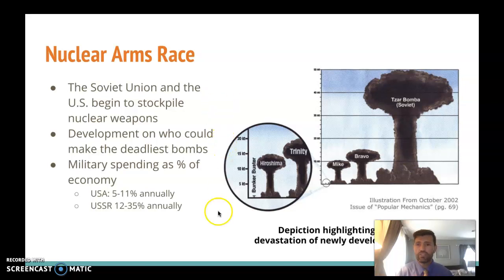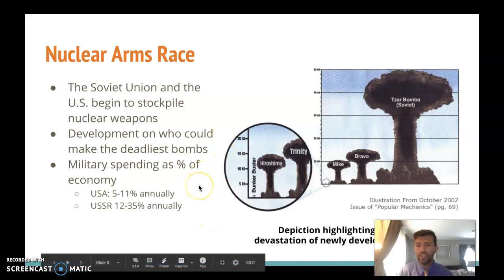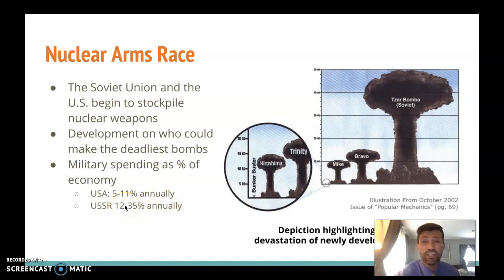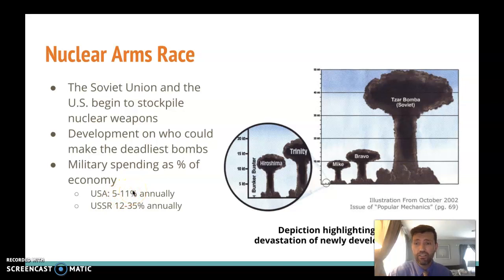The main takeaway here is that because both sides were trying to outspend the other on the nuclear arms race, they were both spending huge amounts on their militaries. But since the Soviet economy was growing more slowly, the Soviets were spending between 12 and 35 percent of their entire country's annual production on the military, while the United States was spending between 5 and 11 percent. Even 11 percent is very high; 5 percent is more in line with modern budgets.